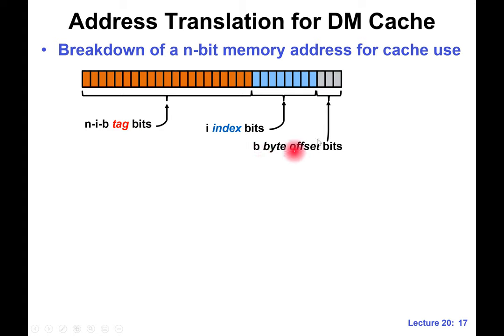Let's say we have three bits — in this specific example, we have three byte offset bits. That means the cache block size or the memory block size is two to the three, so we have eight bytes per block. We use these three bits to address each individual byte in that cache block. That's where we use these offset bits.